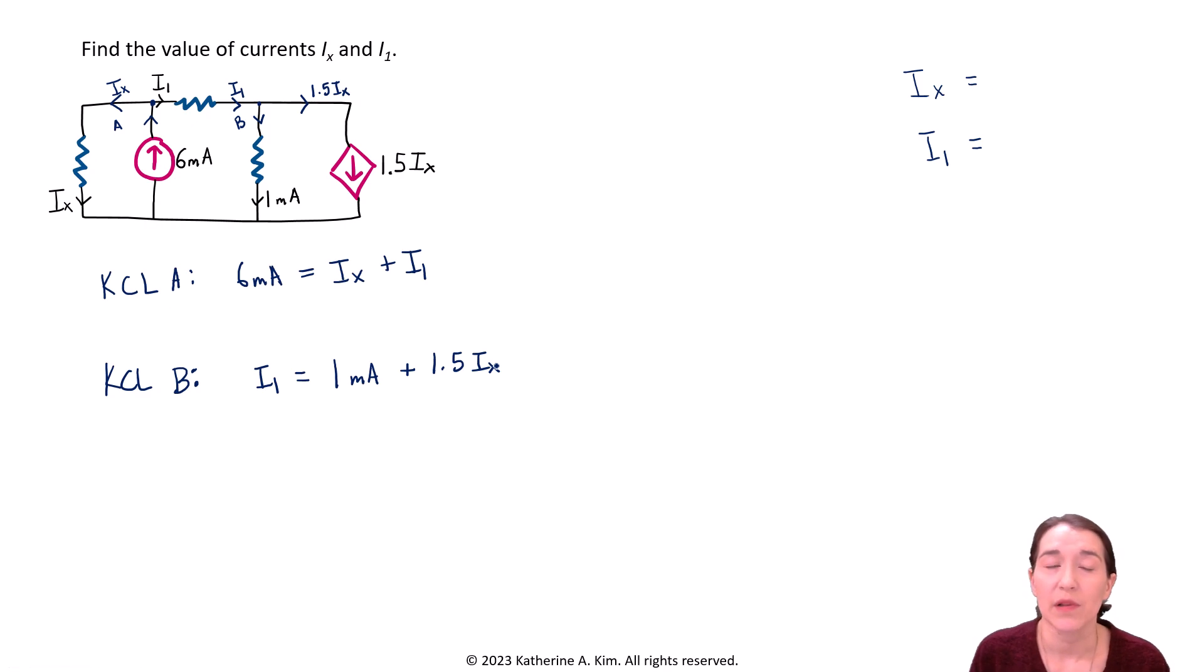So what we've done by applying Kirchhoff's current law in two different nodes. So the intersection A, I guess you could also call this node A, up here. And then B over here is we have two different equations, linearly independent equations, they're from different properties of the circuit. And they have two independent equations, and they both have I1 and Ix. So we have two unknowns and two equations. So we should be able to solve for that. So now just treat this as a math problem.